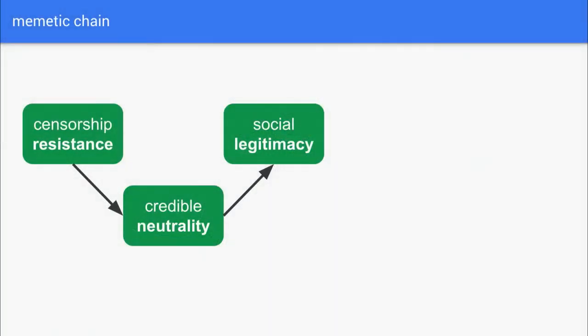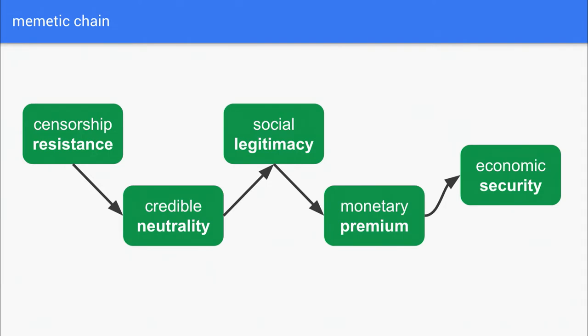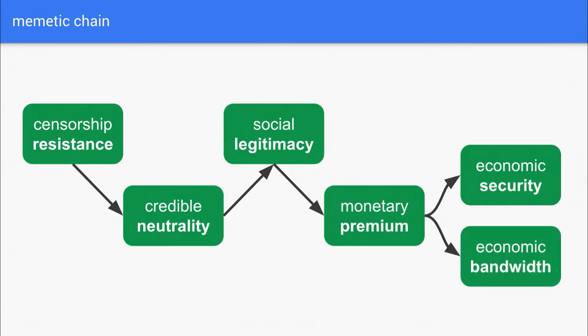What is this chain? It goes through credible neutrality. Without censorship resistance, you can't have credible neutrality. Without credible neutrality, you can't have legitimacy. Without legitimacy, you can't have monetary premium — the asset having value above and beyond its raw utilitarian value. And without monetary premium, you can't have the trillions of dollars of economic security and economic bandwidth we need in the context of DeFi.